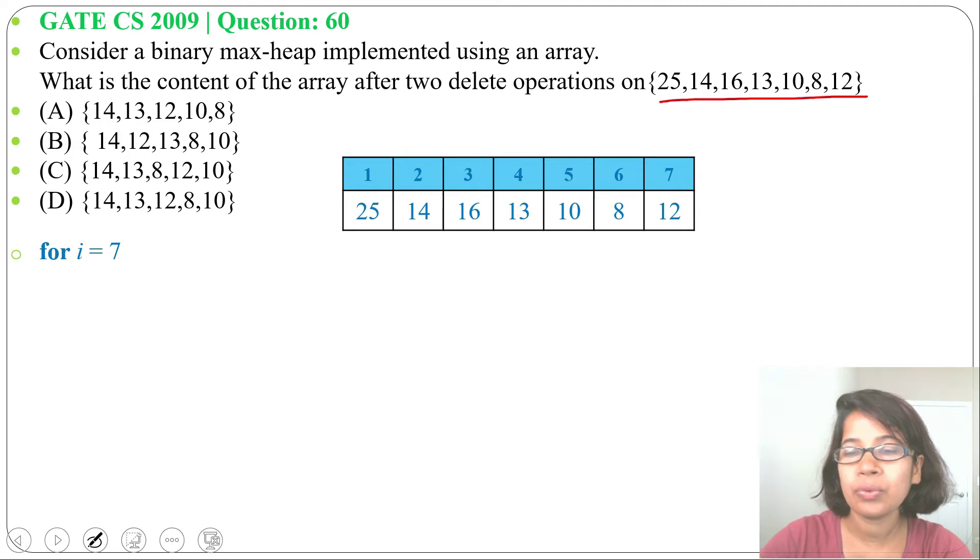Means this 25 will exchange with 12. Let me also construct the max heap so that you can understand. So 25 will be root, its left child will be 14, right child will be 16.